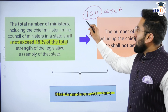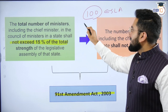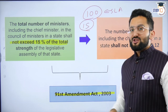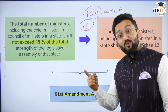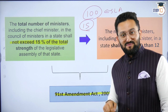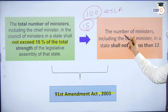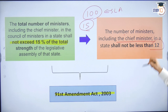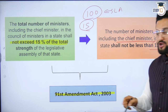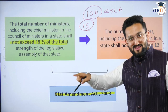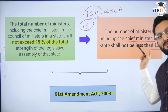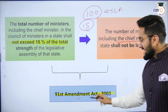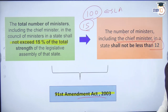It means out of 100 — the total strength — you can only make 15 ministers, along with CM. The number of ministers including CM in states shall not be less than 12. So maximum is 15% and minimum is 12 for states. This came through the 91st Amendment Act.